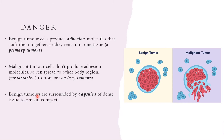Benign tumors are surrounded by capsules of dense tissue. This dense tissue capsule helps the benign tumor stay compact in one tissue. The adhesion molecules allow cells to remain stuck together, and the dense capsule keeps it compact — together, these two features keep the benign tumor localized in one space so it doesn't spread to other parts of the body.